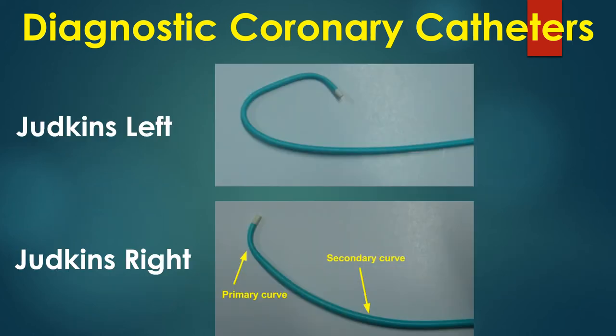Here are pictures of the Judkins left and right coronary catheters. The primary and secondary curves are marked for the right coronary catheter.